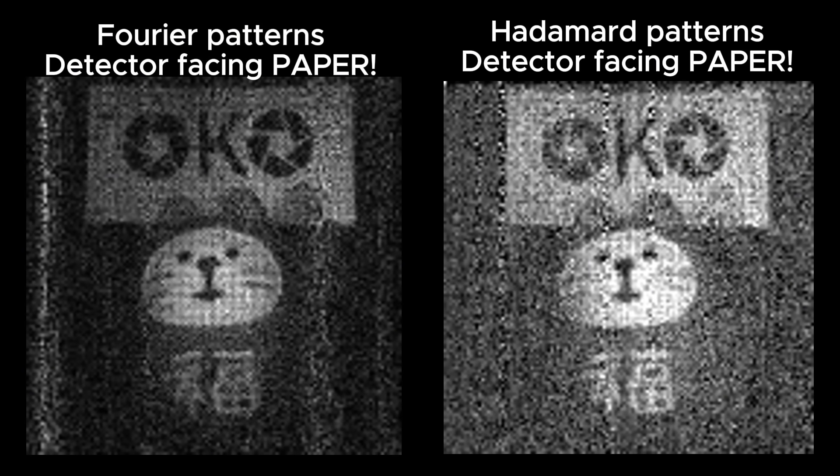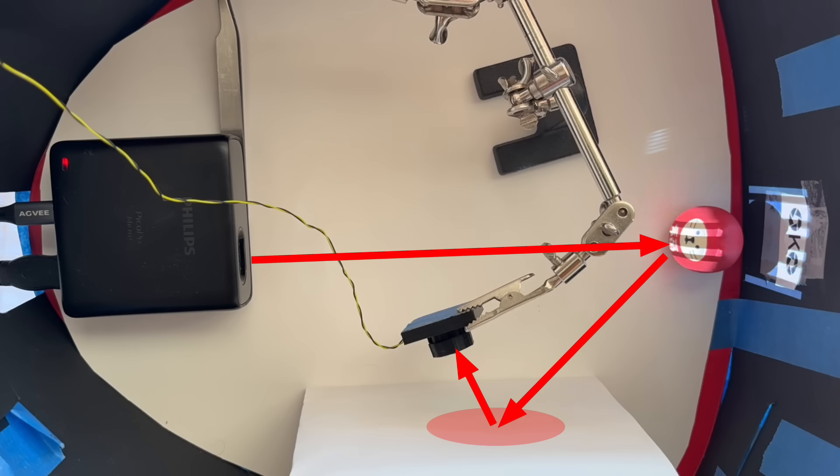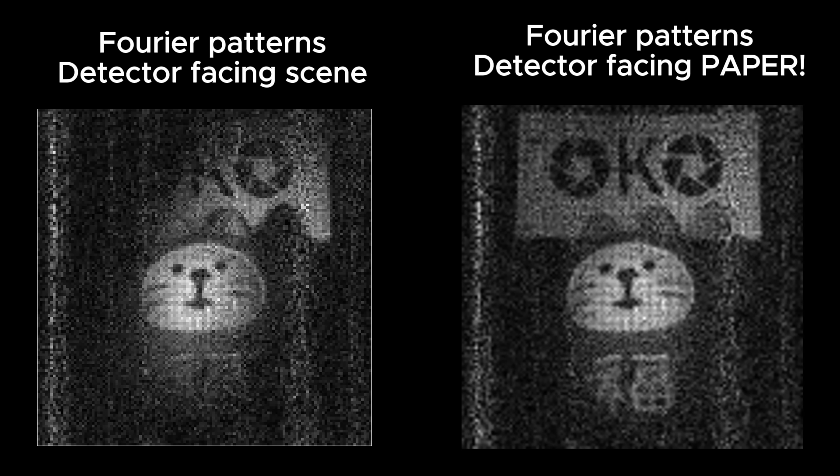But when you think about it, the paper is just acting like a diffuser in front of the detector. All we need to do is collect the light from the illumination pattern. It doesn't matter if it's scattered around before it reaches the detector. Actually, the scene appears to be more broadly illuminated when reflecting off the paper. So we can see the wall behind the cat more clearly than when we have the photo detector facing the scene directly.